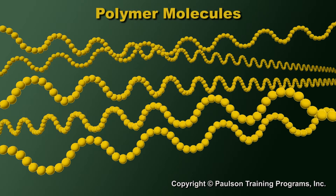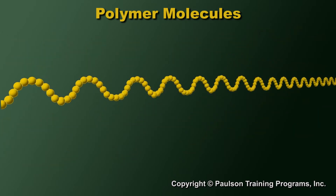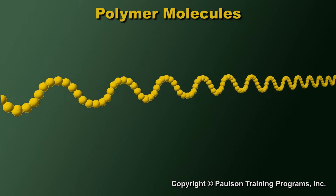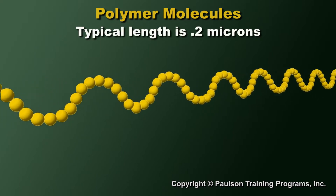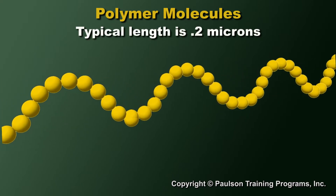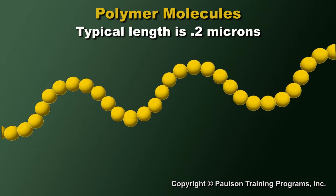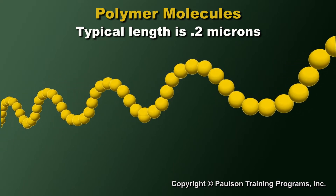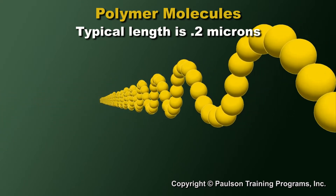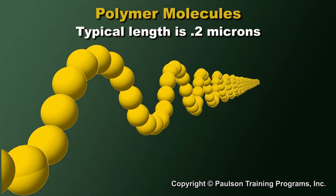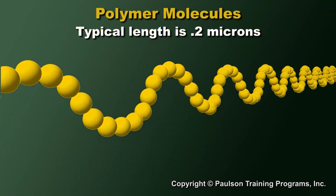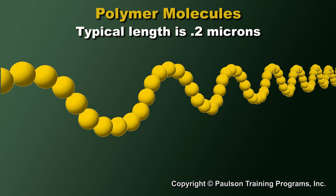Polymer molecules are large as molecules go, but still very tiny by our measurements. A typical polymer molecule length is only about 0.2 microns — that's about 1/200th the thickness of a human hair. The molecule itself might be 1,000 times longer than it is wide. This long, thin structure is one of the most important characteristics of polymers.